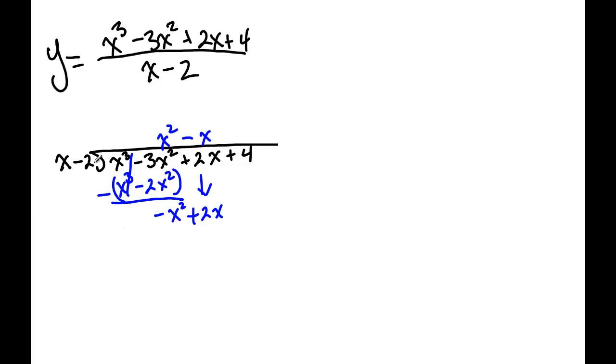And then we distribute, I mean multiply again: negative x times this, so that's negative x squared minus 2x, actually plus 2x. And we subtract, well both of those go away.